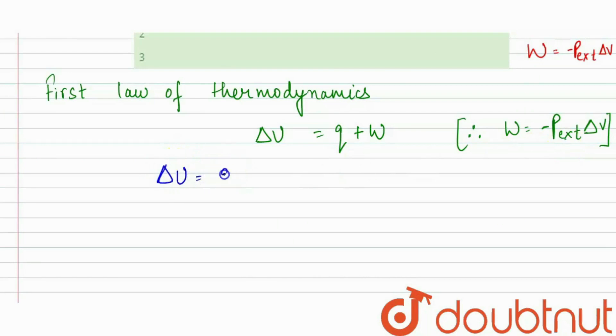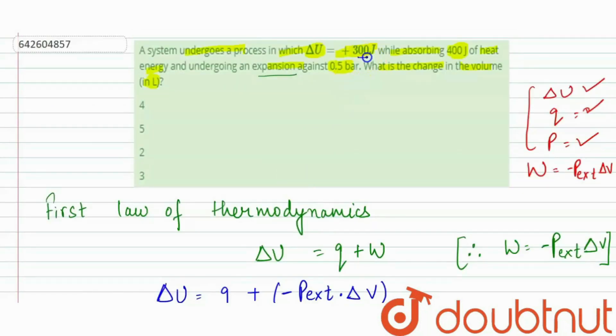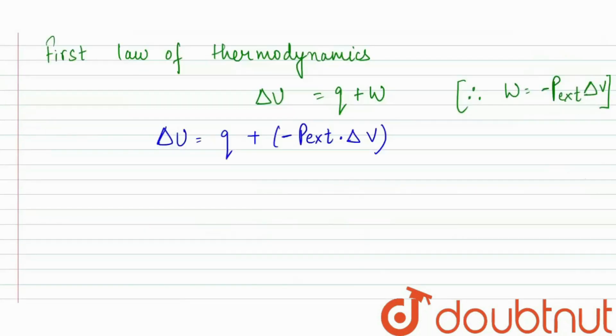We can write delta U equals Q plus minus P external into delta V. Our delta U is plus 300 joules, Q (heat energy) is 400 joules, and pressure is 0.5 bar. So 300 joules equals 400 joules minus 0.5 times delta V.